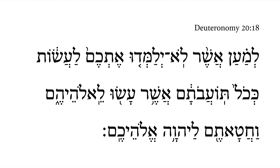Deuteronomy 20, verse 18. We get here 'lemaan' that gives us a 'so that' — a purpose clause. 'Asher' is a little bit awkward if we think about it directly; we get 'so that which.' But this is a way of making this verbal action nominal or a complement, so we can kind of ignore it.